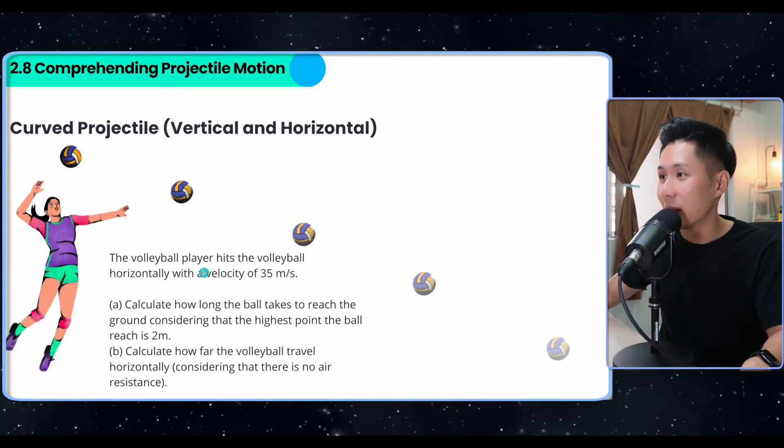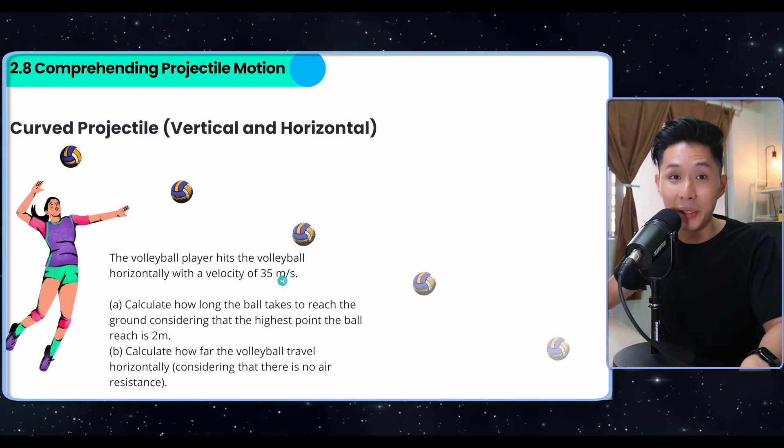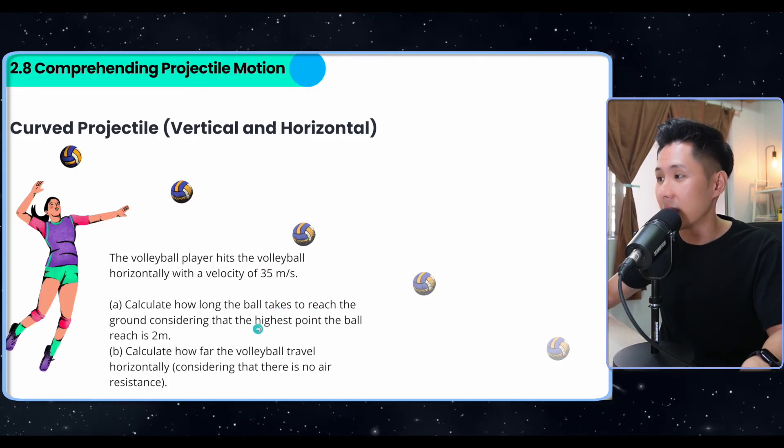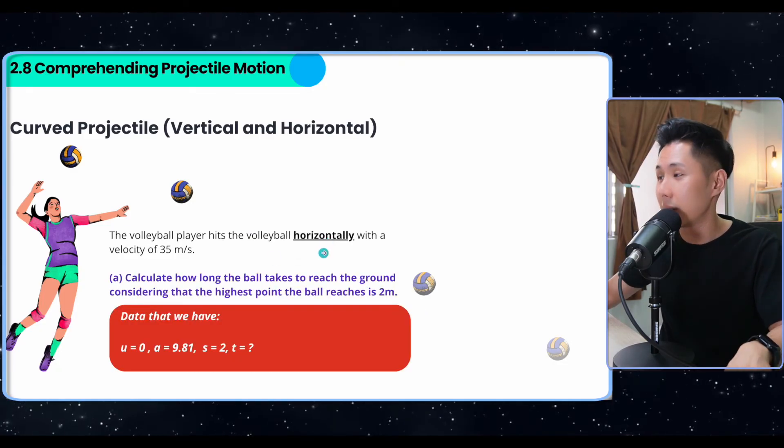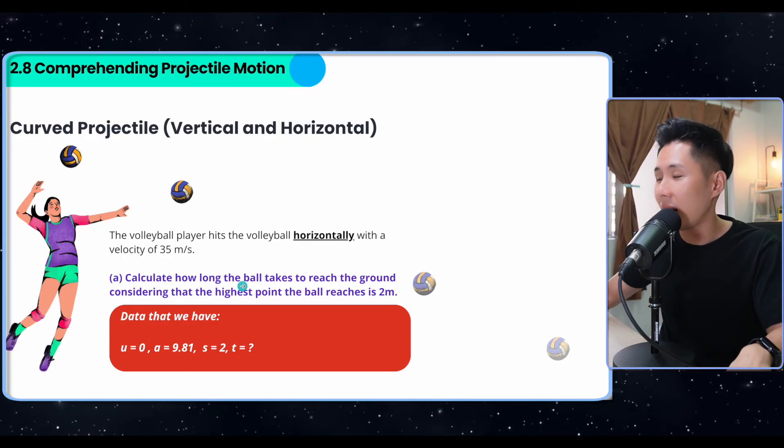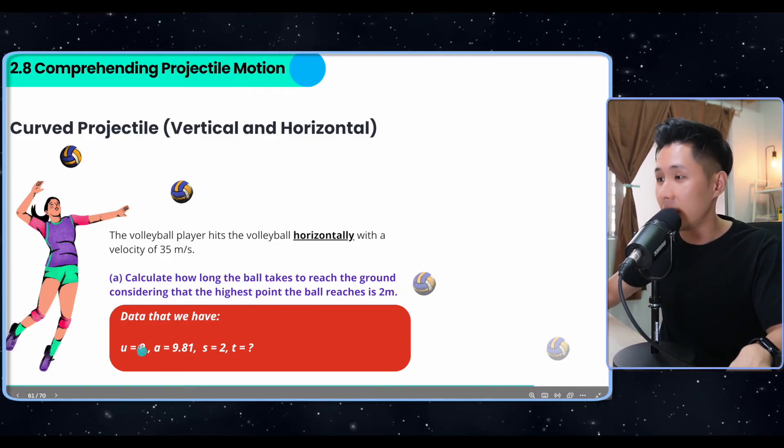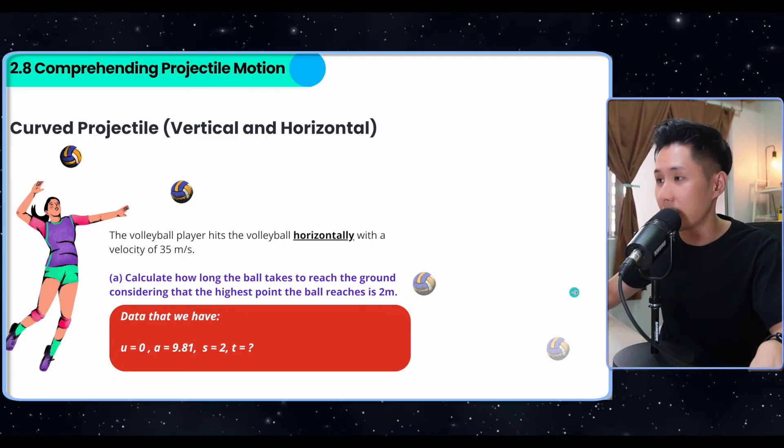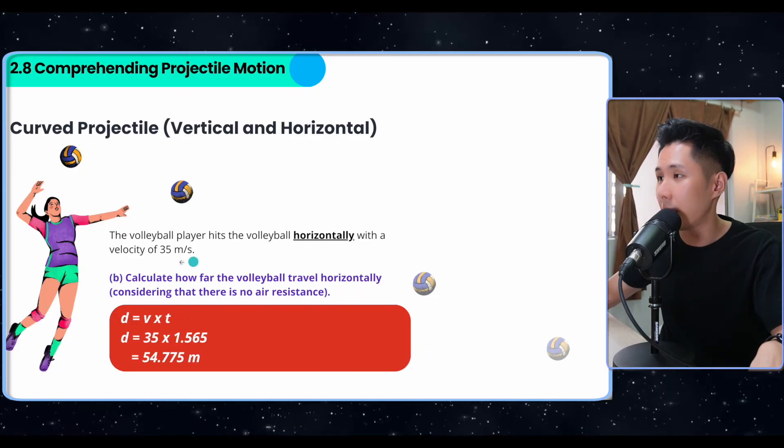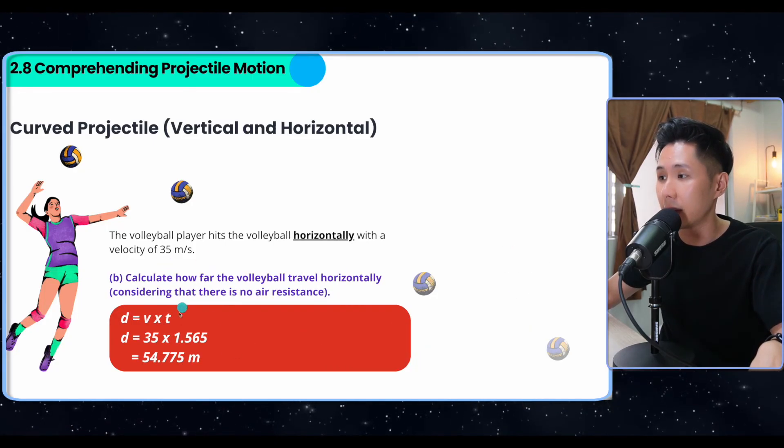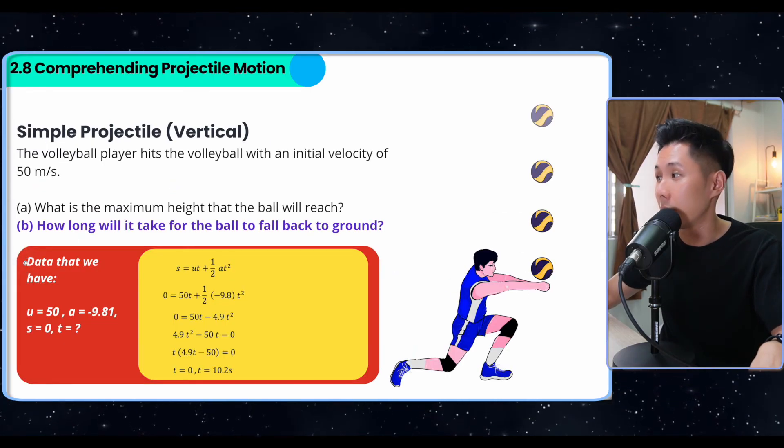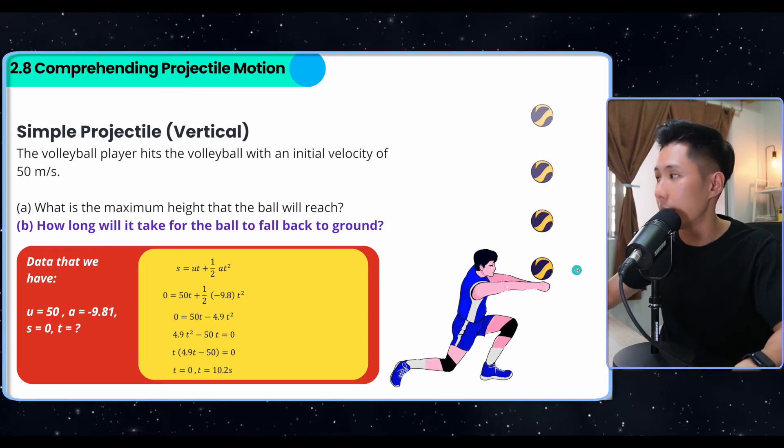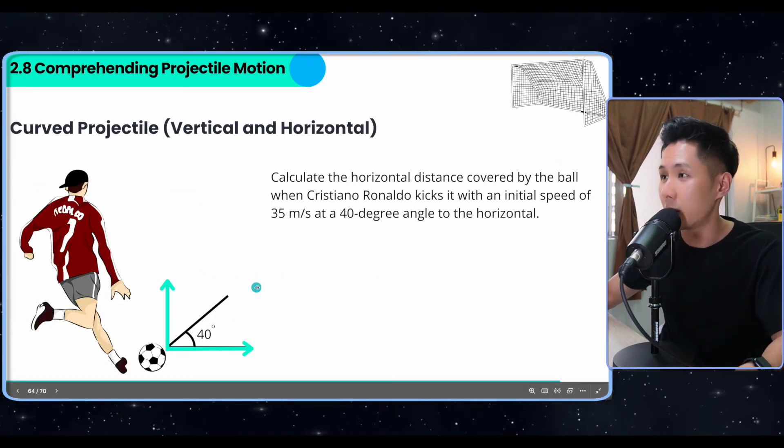Now, let's apply some curved projection. So the volleyball player hits the volleyball horizontally now with a velocity of 35. You can see it's doing a spike. Calculate how long the ball takes to reach the ground, considering that the highest point the ball reaches is 2 meters. She hits the ball horizontally. So we need to calculate how long the ball takes to reach the ground. So how can we do that? So we know the initial velocity is zero because it's hitting at the highest point. And A is 9.81 because it's traveling downward, S is equal to 2. Again, I can apply the formula to calculate the time. That's when we know that we can use velocity multiplied by time to find out the distance travel. So in this case, in question example number one and example number two, it still revolves around equations of motion because I'm just trying to help you recap the concept.